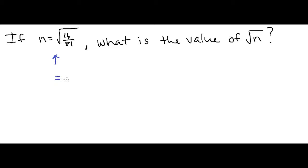So anytime you have a radical of a fraction, you can break that down into the radical of the numerator over the radical of the denominator. So what I mean by that is this is equal to the square root of 16 over the square root of 81.